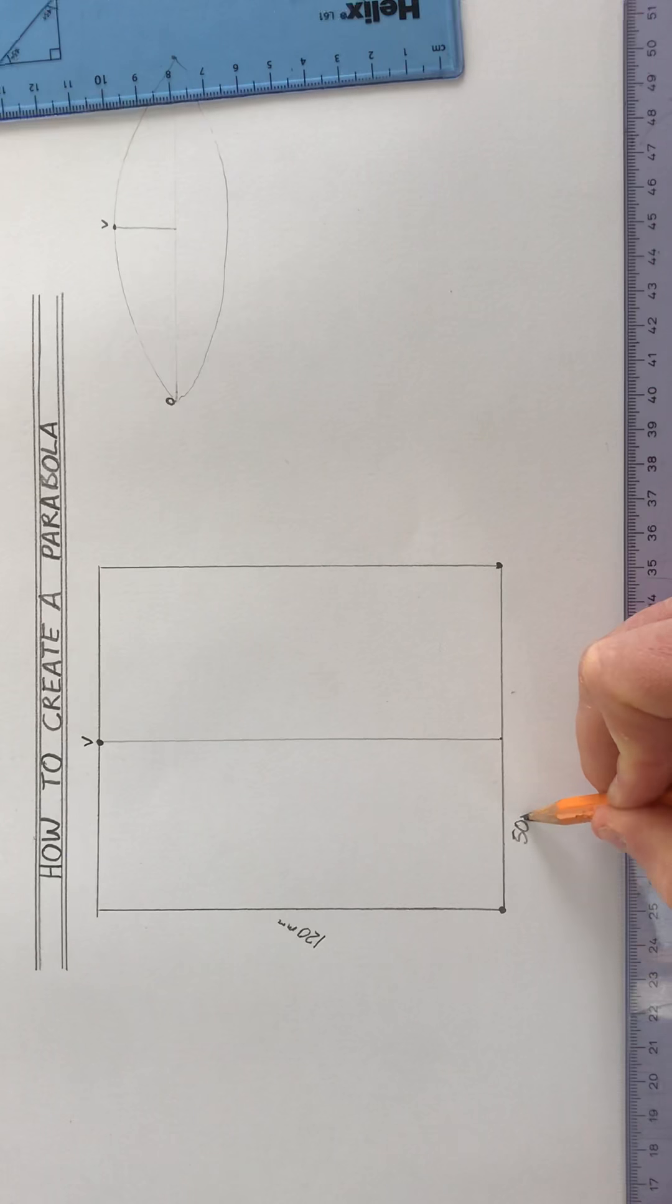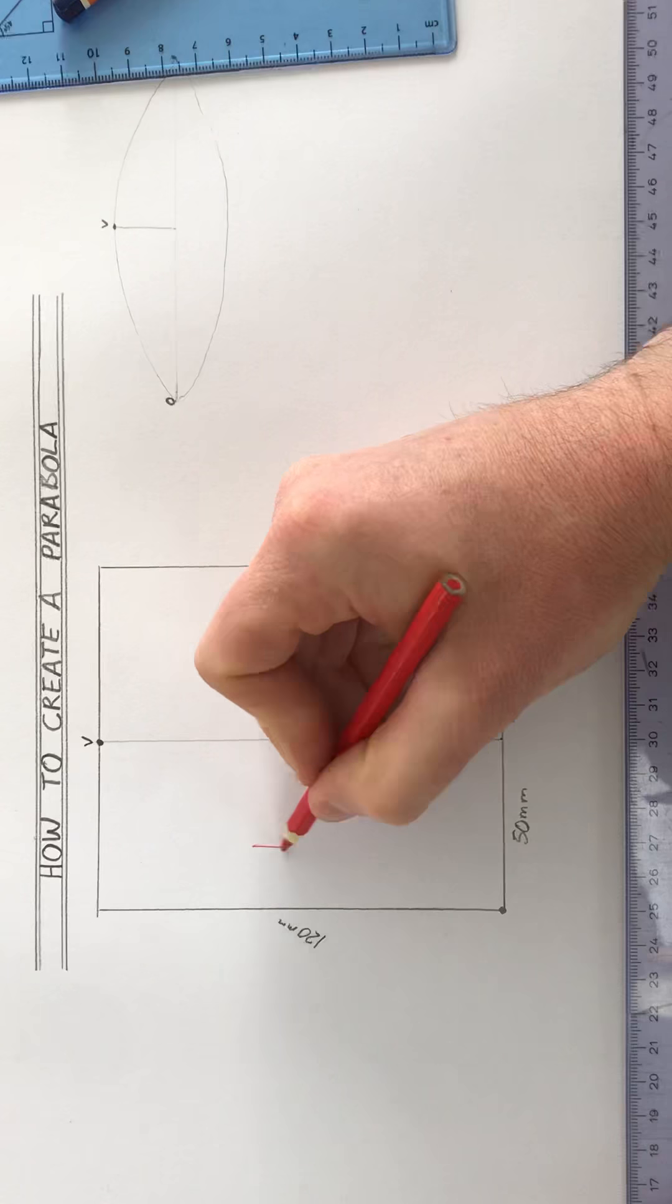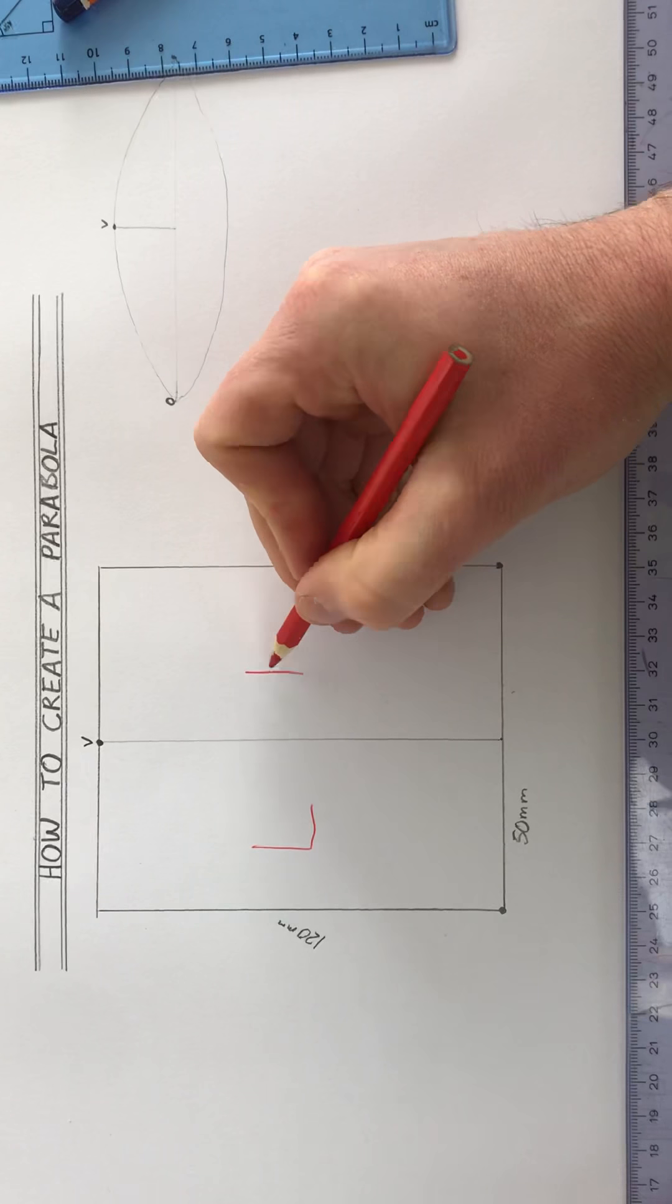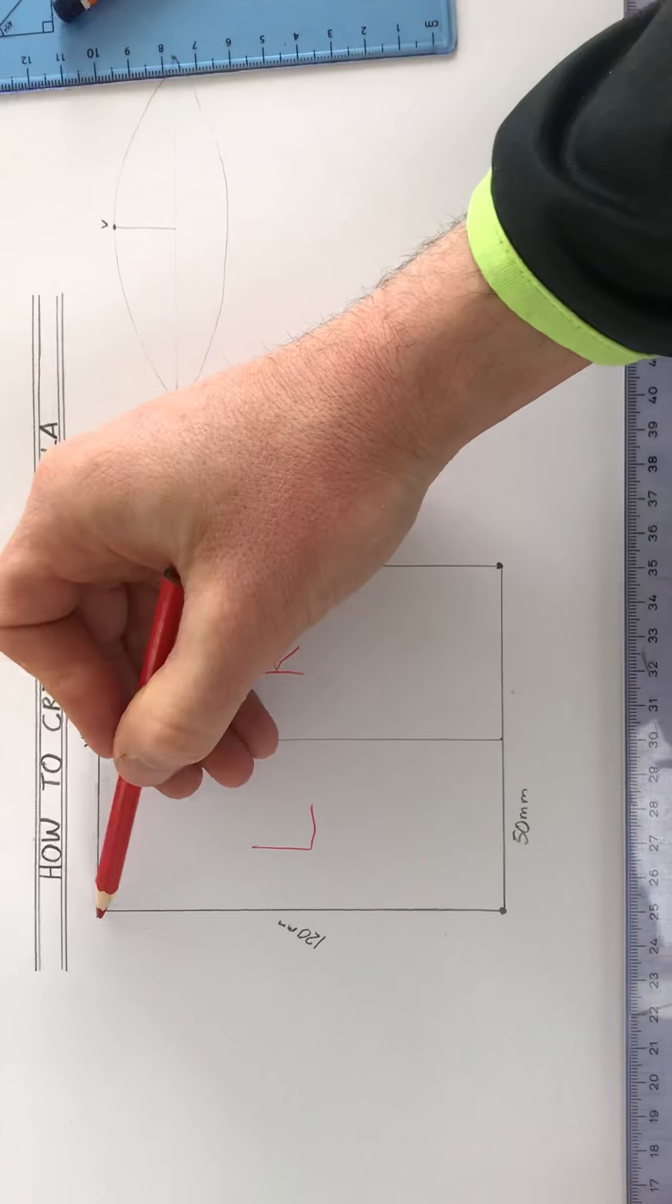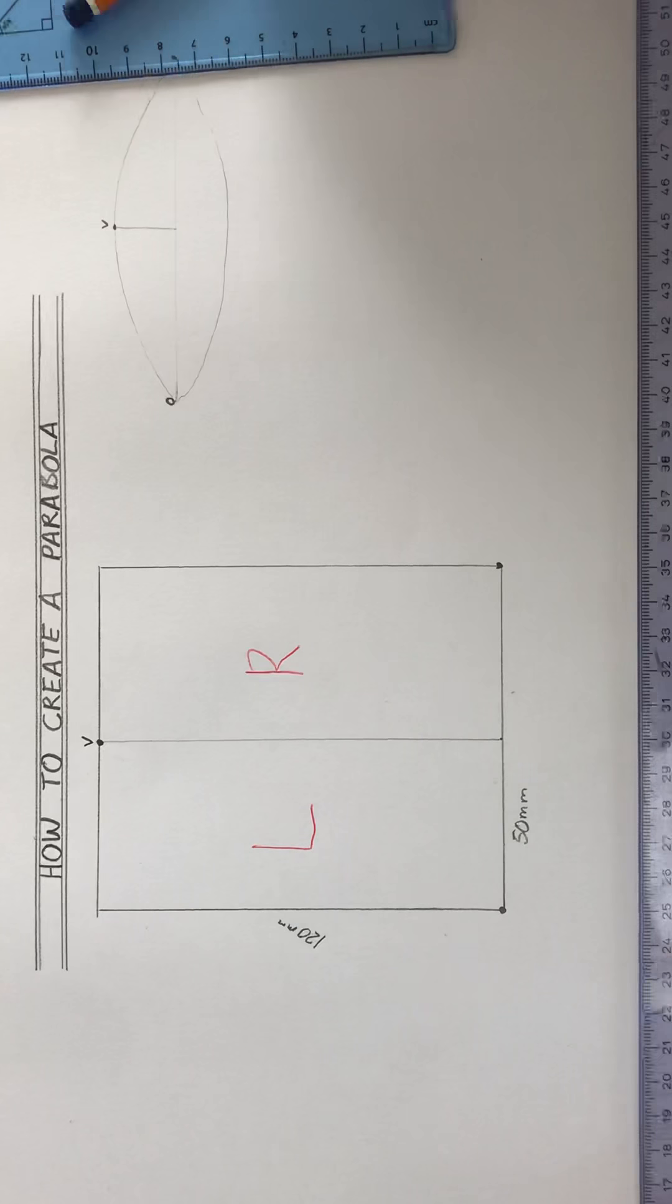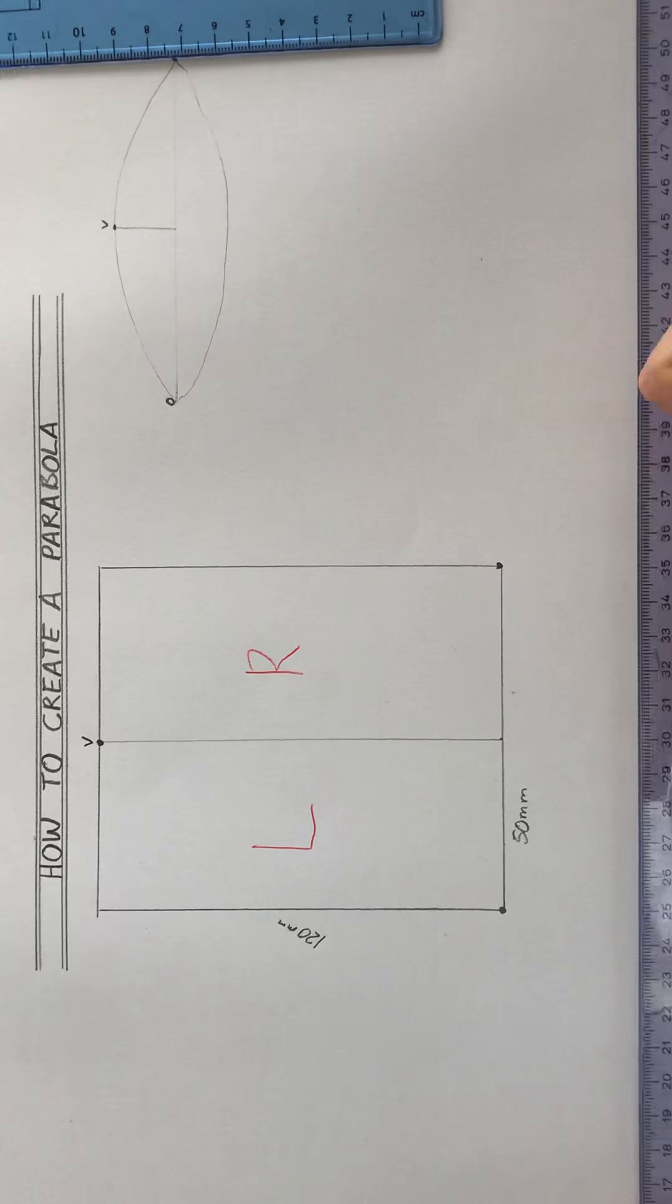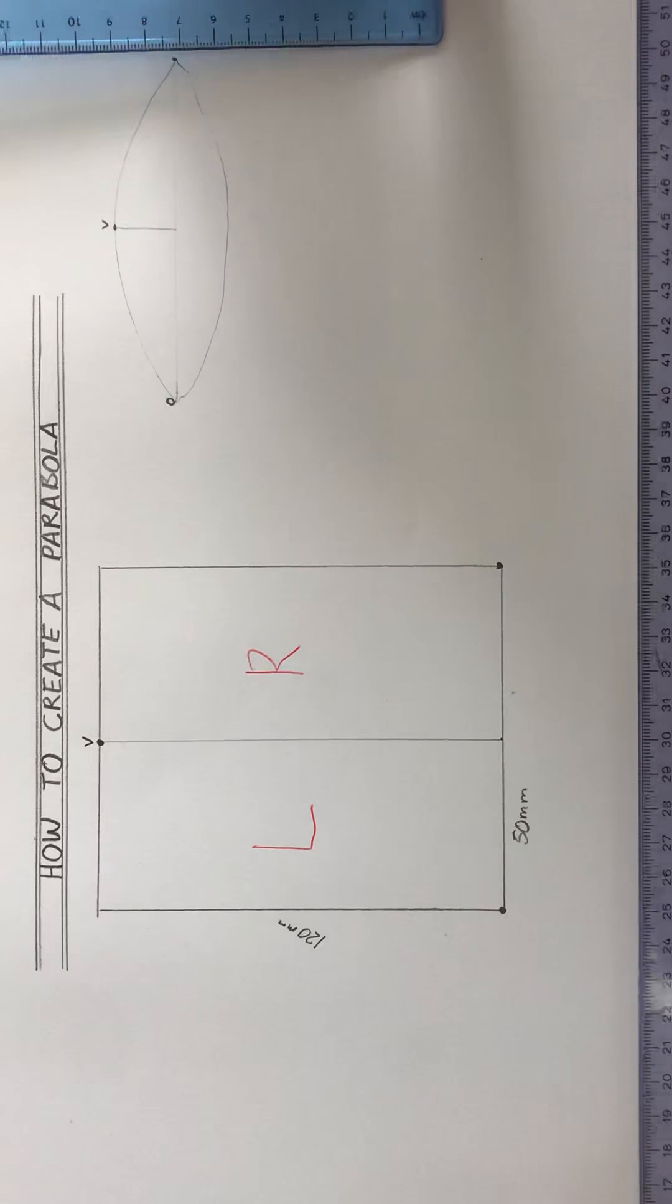I always work with two boxes. We have a left-hand box and we have a right-hand box, so the left-hand box is 120 high and it's 50 wide. I want to divide the height and the width up into the same amount of parts.